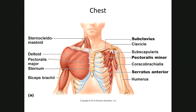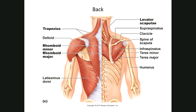Subscapularis is right in here under the scapula. So you have four muscles — subscapularis, supraspinatus, infraspinatus, and teres minor — that make up the rotator cuff. These stabilize the shoulder. When people say they have a rotator cuff tear, one or all of these muscles have become torn.